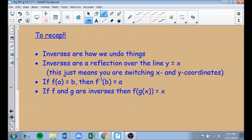To recap all this, inverses are how we undo things. They're reflection over the line y equals x, which means you're constantly switching the x and y coordinates. If f of a equals b, then f inverse of b equals a. And if f and g are inverses, then f of g of x equals x. If you compose the two functions, you get the same thing because one just undid the other. It's a hugely important topic that you've really been using most of your math career. We're just going to get it formalized, these beautiful inverses.